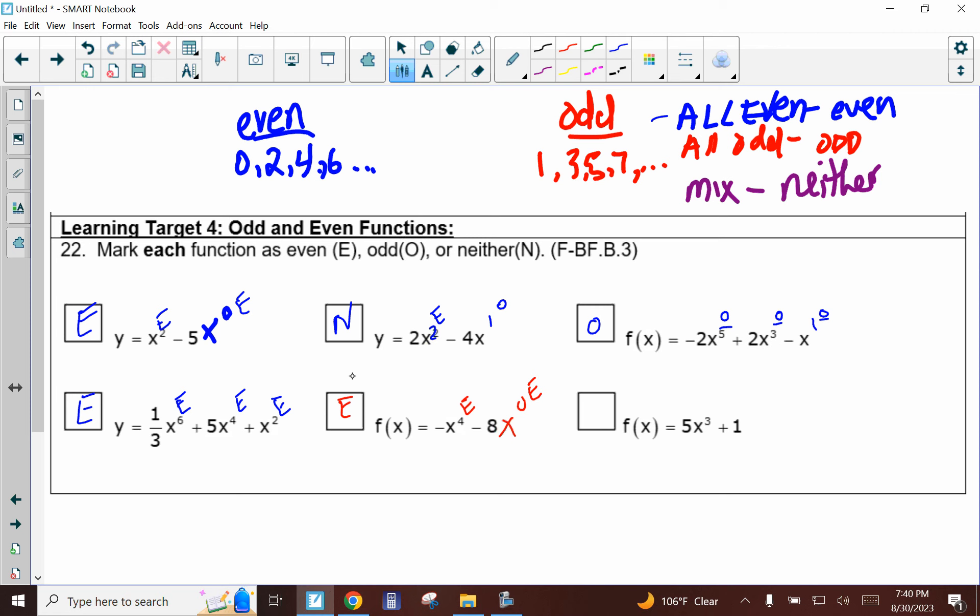You look at this last one. This has a three for the exponent, so this is going to be odd. Now this one doesn't have an x, so we have to add our own x, and anytime you add your own x, it's a zero, and zero is also going to be even. So we have an odd and we have an even, so when they're mixed, it's going to be neither. So that's how you tell if they're even or odd or neither, just based on the exponents.